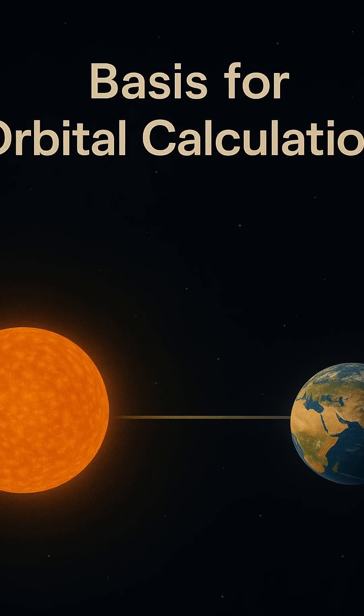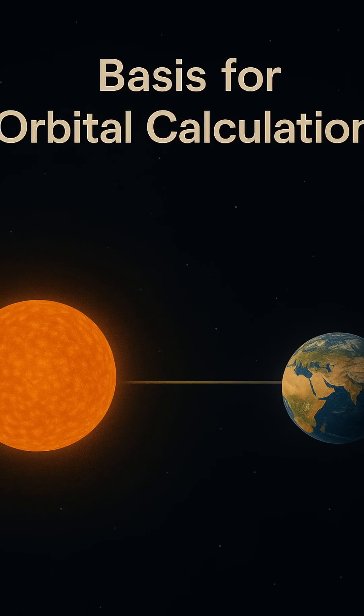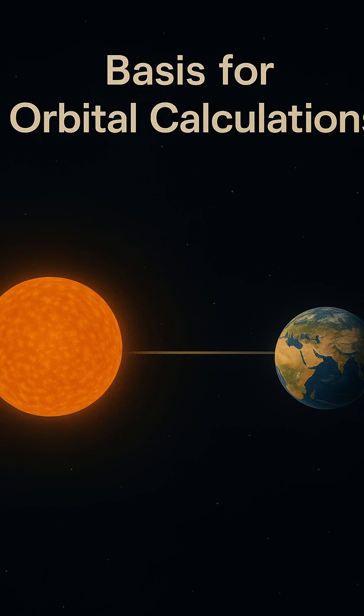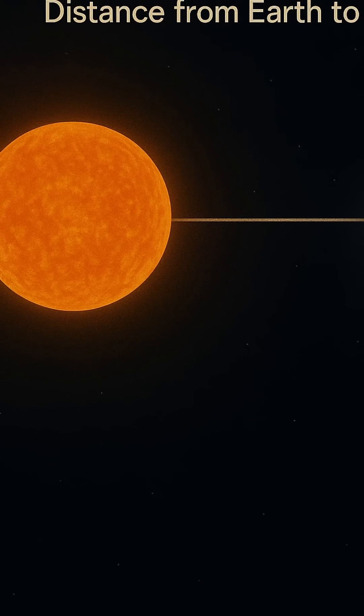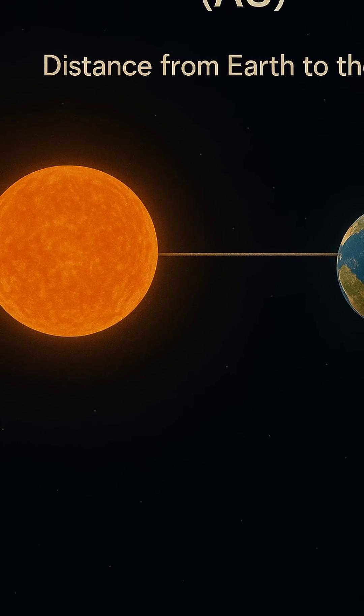The AU is also foundational for orbital calculations. When astronomers calculate the paths of planets, comets, or spacecraft, they often begin with distances expressed in AUs.